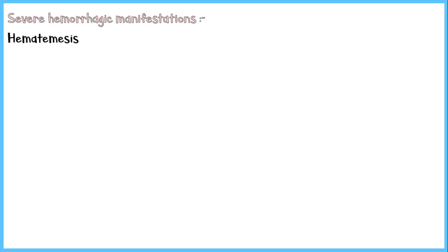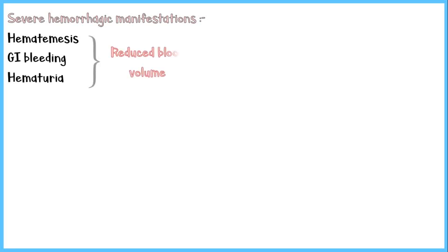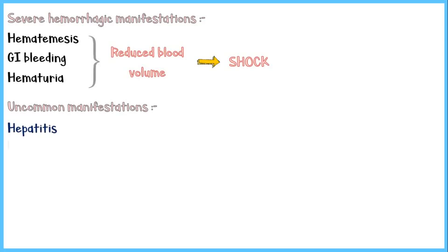In addition, these patients will show severe hemorrhagic manifestations including hematemesis or vomiting of blood, GI bleeding, and hematuria, which also reduce blood volume and ultimately result in shock. Some uncommon manifestations of severe dengue during this phase include hepatitis, myocarditis, pancreatitis, and encephalitis.